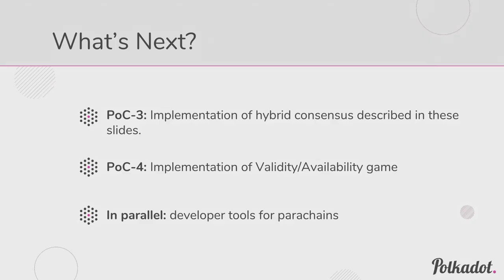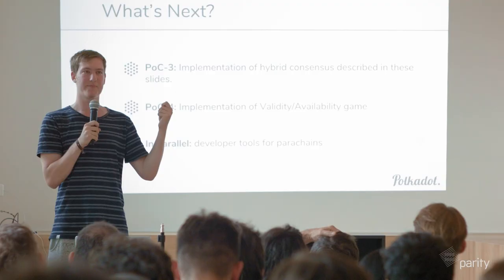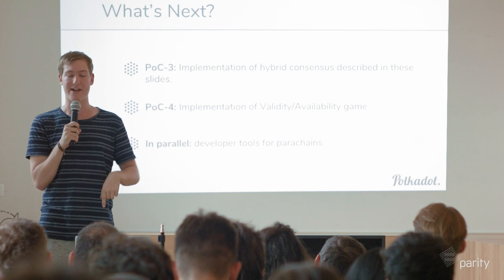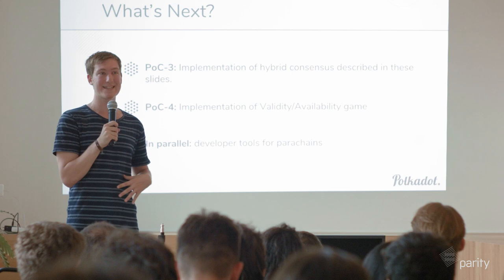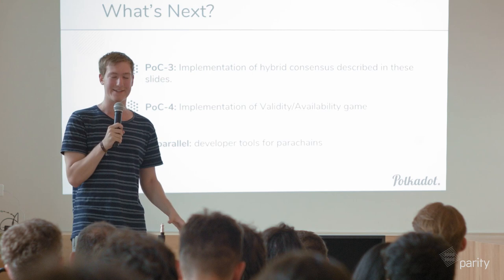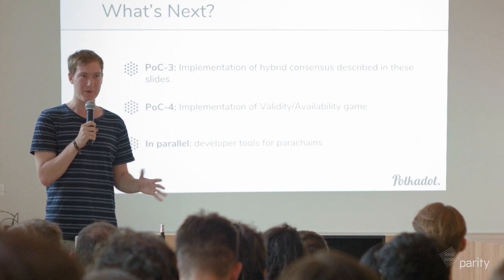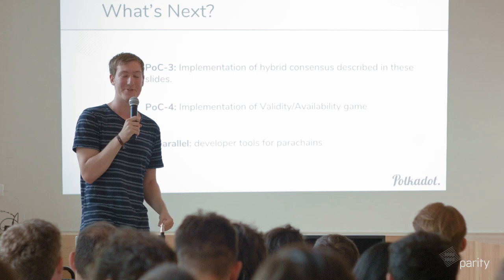What's next is POC3, which we're starting now. That would be implementation of hybrid consensus as described in these slides: block production and finality gadget as two pieces, providing fast speed of growth for the relay chain plus fast finality and good security guarantees. POC4 will be implementation of the validity and availability games. In parallel with POC3 or 4, people can already start writing parachains — documentation isn't there yet but it's getting there. Even today I was playing around writing a dummy parachain to deploy onto Polkadot POC2.